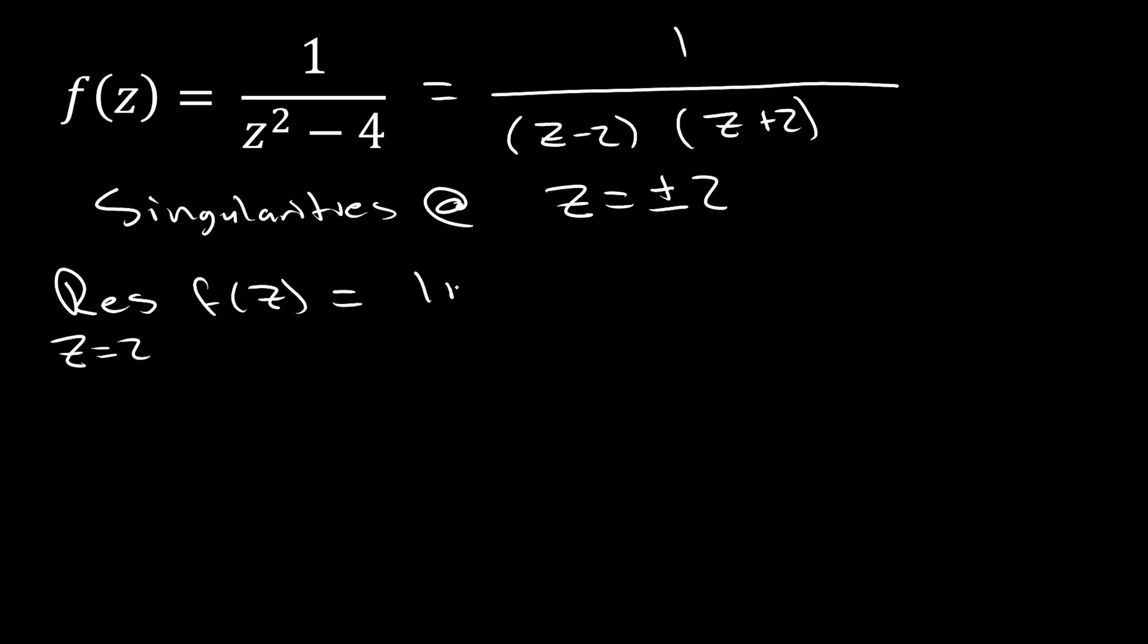So, we'll take the limit as z goes to two of z minus two, because this is a pole of order one, on z minus two times z plus two. Here, our z minus two terms are going to cancel out. And so, we're just left with the limit as z goes to two of one on z plus two. And so, that's just going to equal one-fourth.